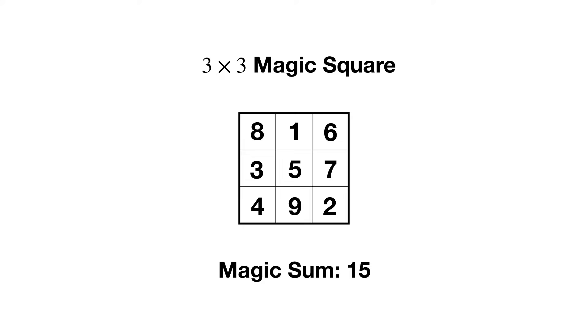A magic square is a square array of numbers that satisfy the property that each row, column, and long diagonal sum to the same number. Usually we just use consecutive numbers starting at one. For example, the smallest interesting magic square is a 3 by 3 magic square. Note that each row, column, and long diagonal adds up to exactly 15.